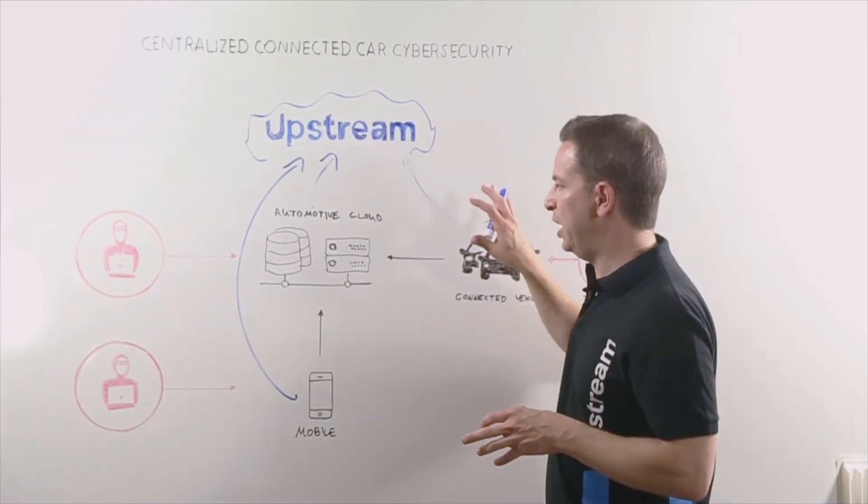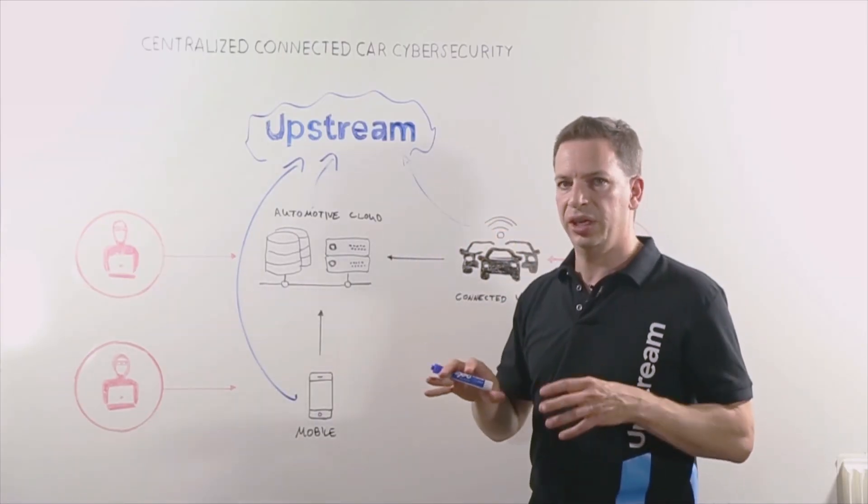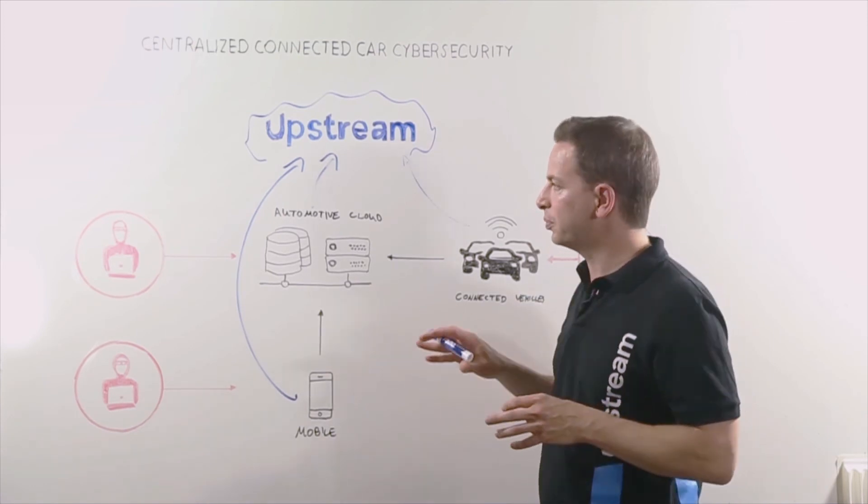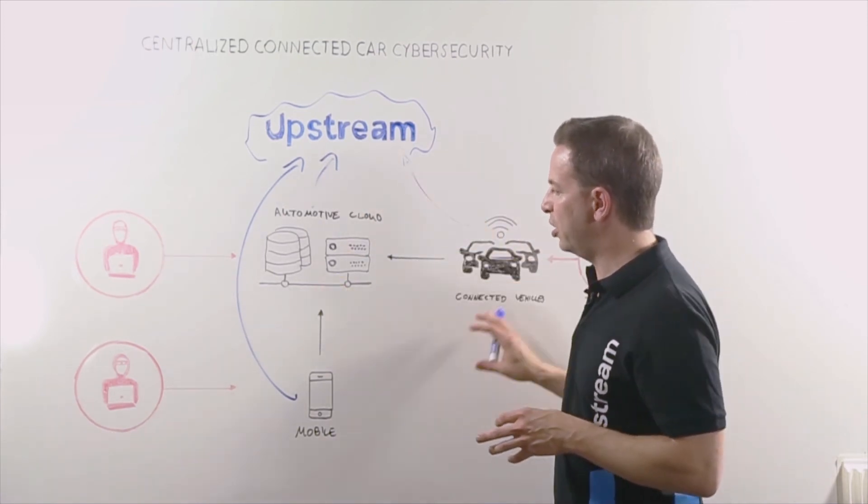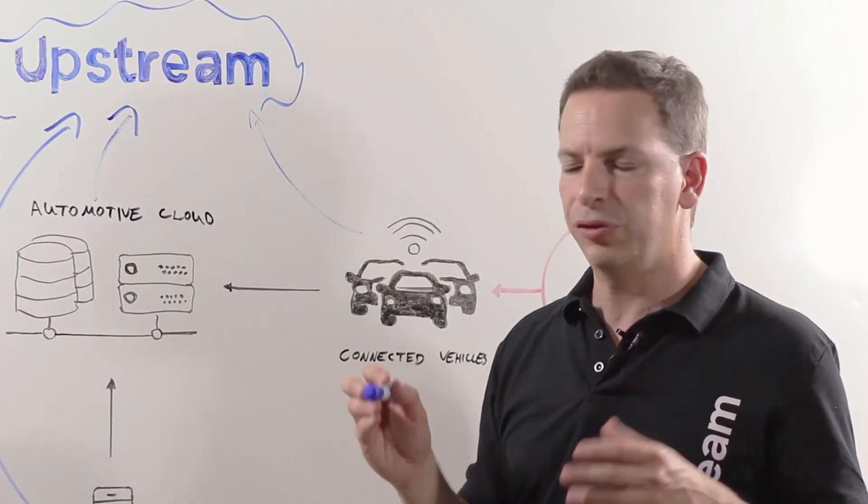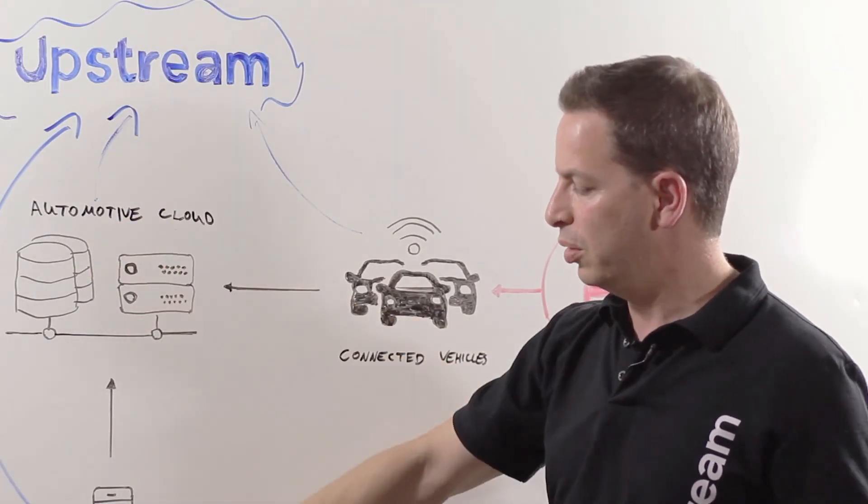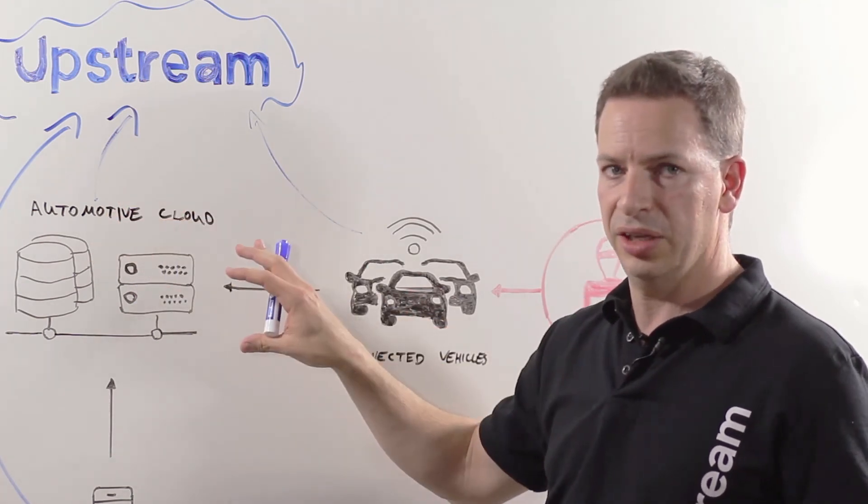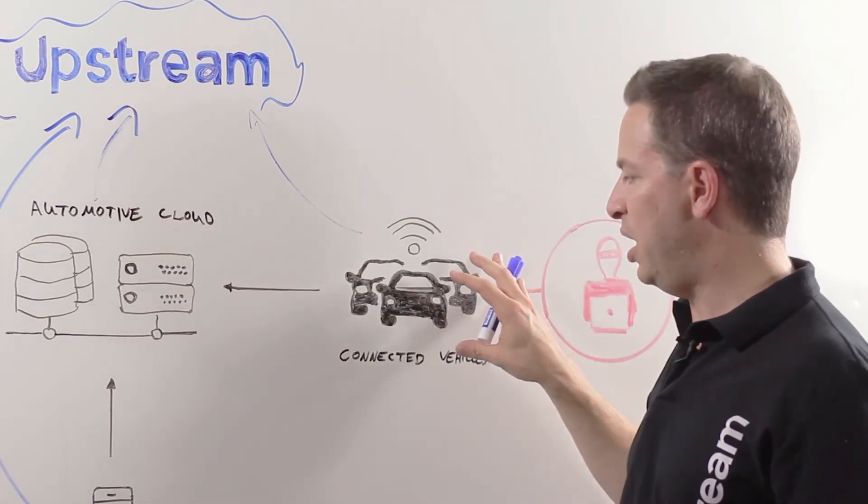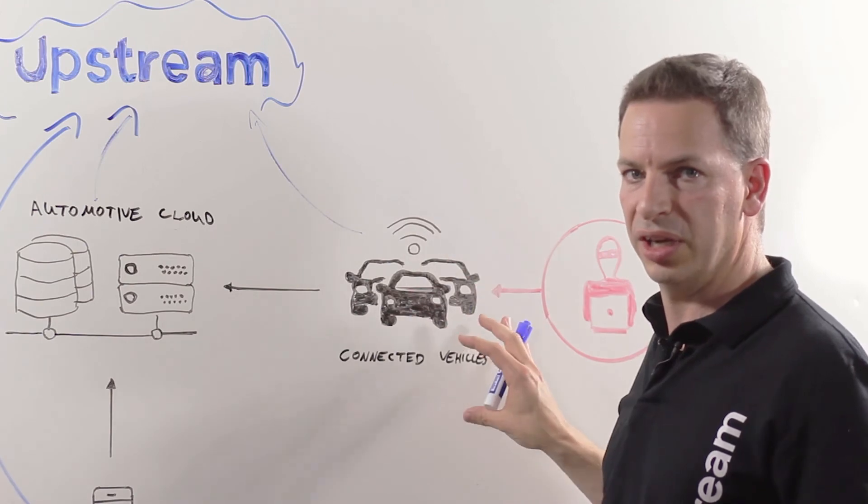What we do with all this data is we analyze it using advanced machine learning and big data analytics capabilities, and we model the entire connected car service. The platform understands what's the normal behavior of both the application servers—mobile, telematics, any additional service—as well as the behavior of any given car within the connected car service.